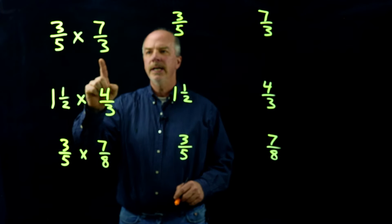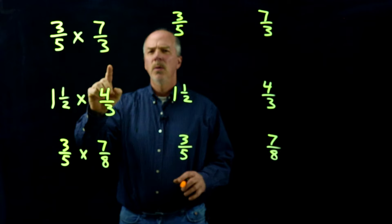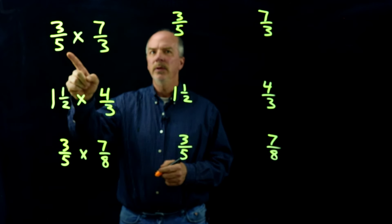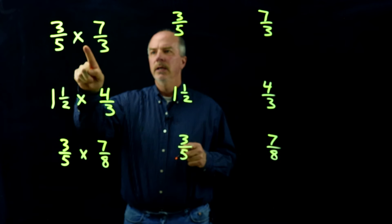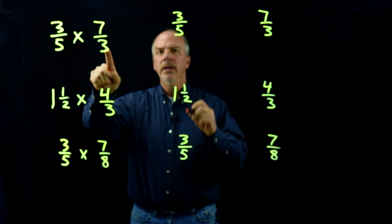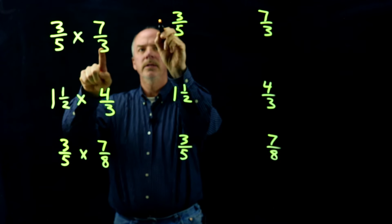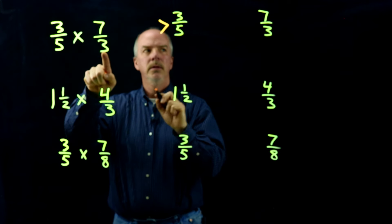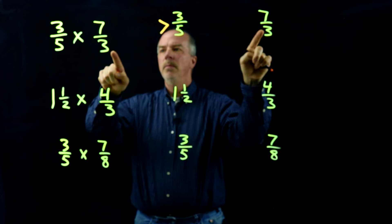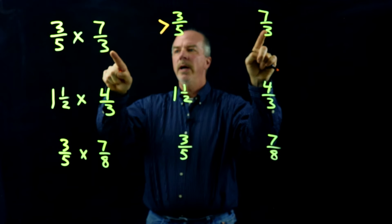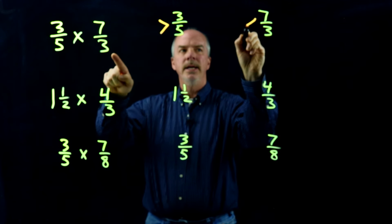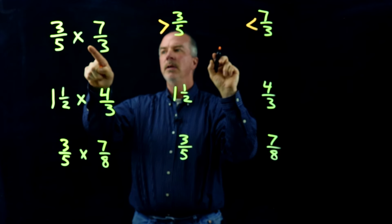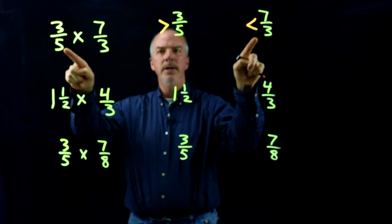3 fifths times 7 thirds. What do I know about the product without doing calculations? I know that the product will be greater than 3 fifths because 7 thirds is greater than 1. The product will also be less than 7 thirds because 3 fifths is less than 1.